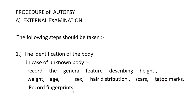Procedure of autopsy — first, external examination. The following steps should be taken. First, identification of the body. In case of an unknown body where the name and address of the person are not known, general features are recorded, describing height, width, approximate age, sex, hair description, scars, tattoo marks, and fingerprints.